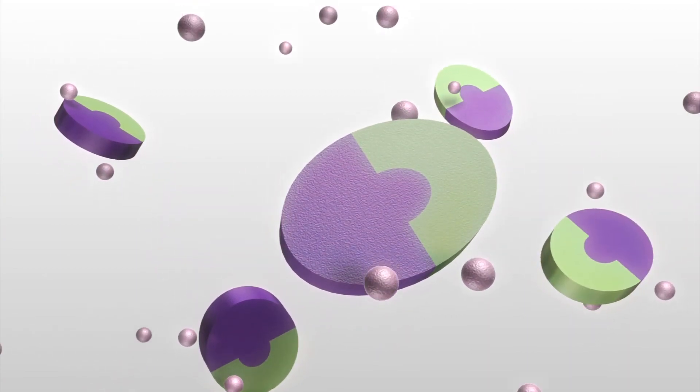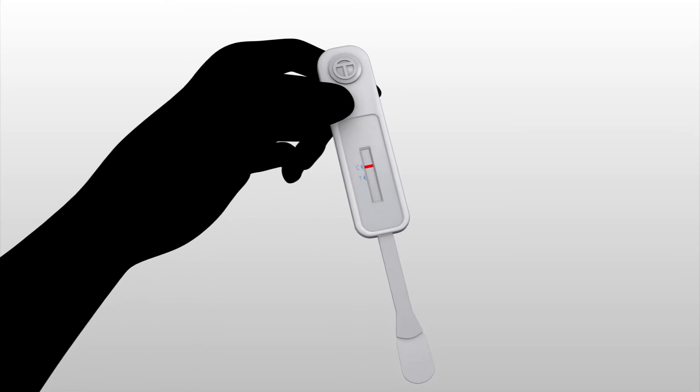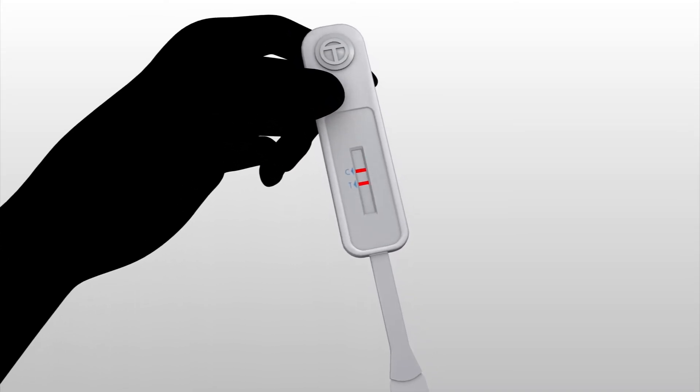The enzyme changes the color of the test paper to produce a line to indicate that the person is HIV positive.